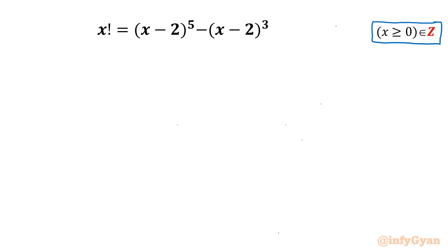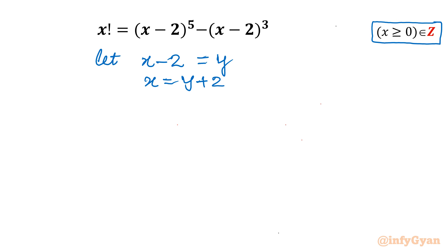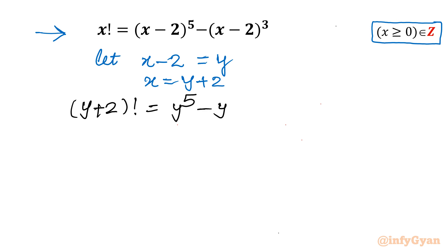Let's get started by writing our substitution. I will write: let x minus 2 equal to y, so x will be equal to y plus 2. Putting these values into our equation, it becomes (y plus 2) factorial equal to y to the power 5 minus y cubed.